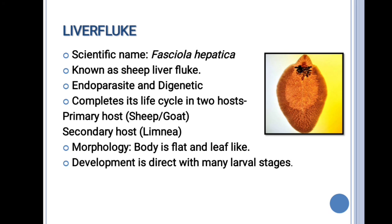The next example is the liver fluke. Its scientific name is Fasciola hepatica, commonly known as the sheep liver fluke. It is an endoparasite and digenetic, completing its life cycle in two hosts. The primary host is the sheep or goat, and the secondary host is Limnea, which is a snail. The liver fluke is flat and leaf-like in appearance.